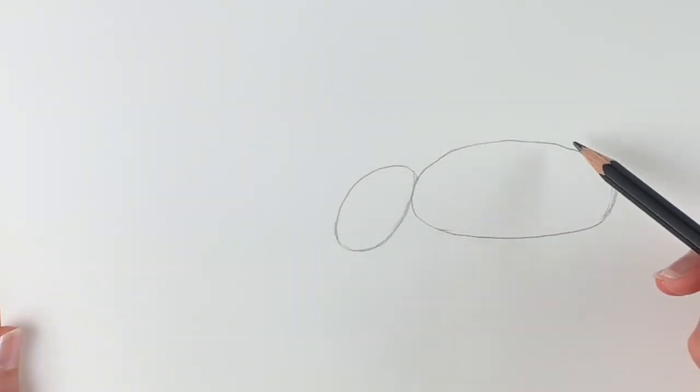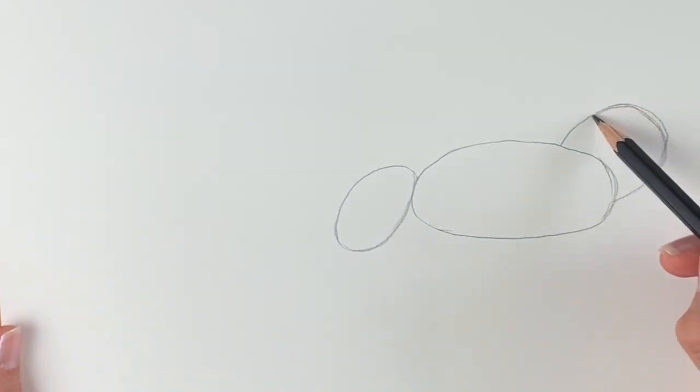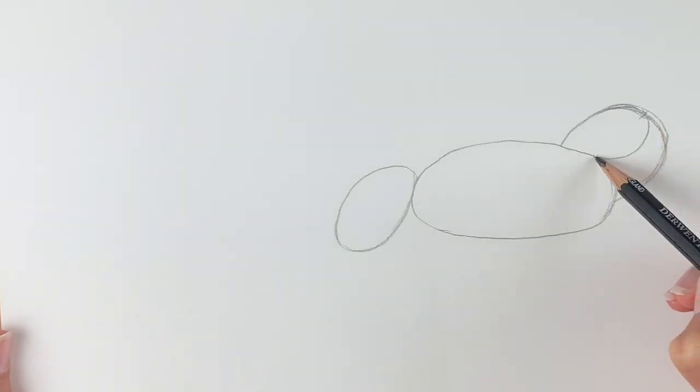Now we're going to do the head, so this is going to be a shape just like this. So just follow what I'm doing. Come up and round and in again just like this. Now these are all rough guidelines, so you can change them now, use your eraser if they're not the right size or proportion. We're going to draw a line from here down to here, so it's going to be a curved line. So that's going to be the head.